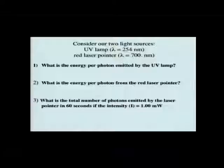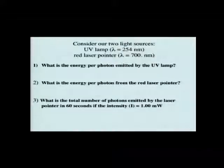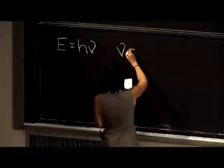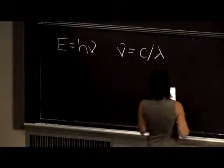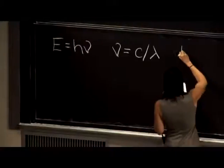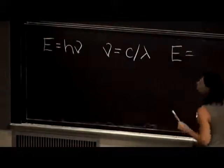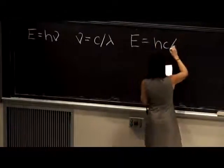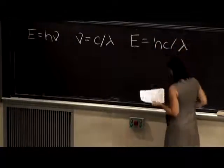starting first with what is the energy per photon. Let's start with the UV lamp. So we know that energy is equal to Planck's constant times nu. But what we know about the lamp is its wavelength. We know that nu is equal to c over wavelength. So we can figure out the energy of each photon emitted by our UV lamp by saying E is equal to hc over wavelength.